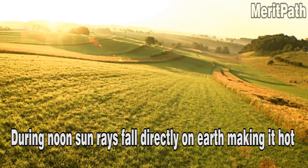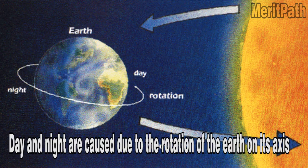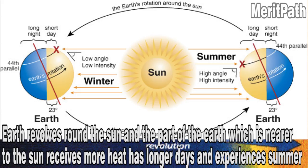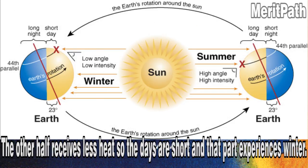Day and night are caused due to the rotation of the Earth on its axis. The Earth revolves around the Sun, and the part of the Earth which is nearer to the Sun receives more heat, has longer days, and experiences summer.